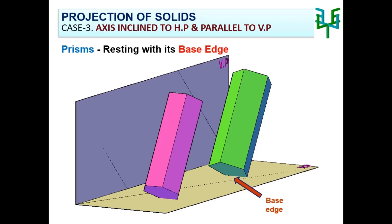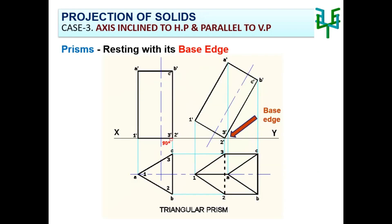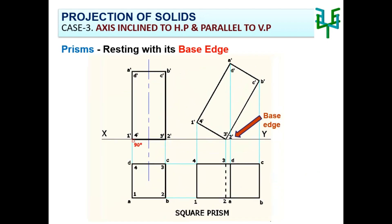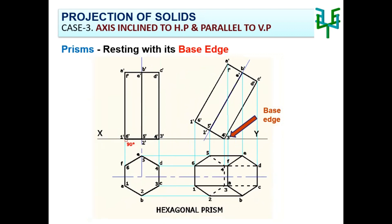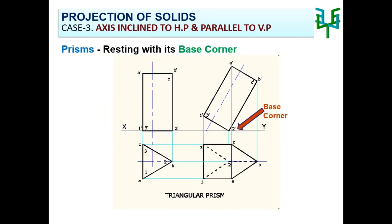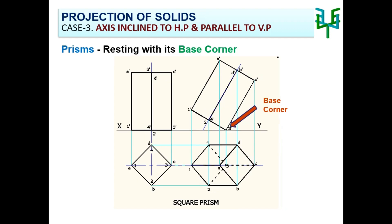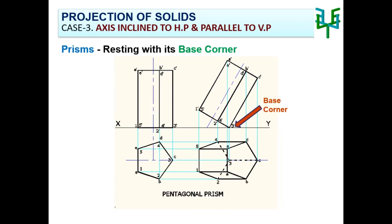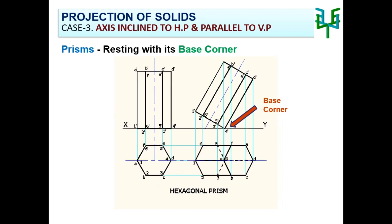These are the different prisms with the same condition — resting on the ground with the base edge and axis inclined to HP and parallel to VP: triangular prism, square prism, pentagonal prism, hexagonal prism. A second possibility for a prism in this condition is that it can rest on its base corner. This includes a triangular prism resting at the base corner, square prism resting at the base corner, pentagonal prism, and hexagonal prism. In all these cases, the axis is inclined to HP and parallel to VP.